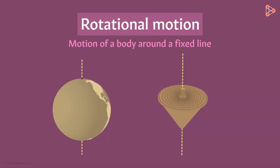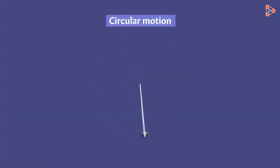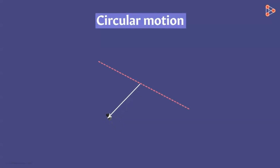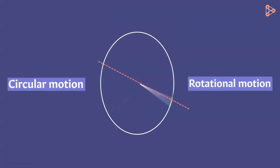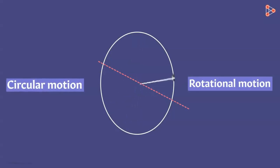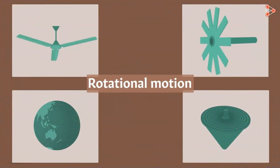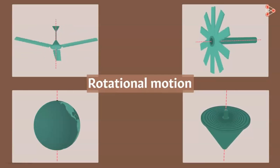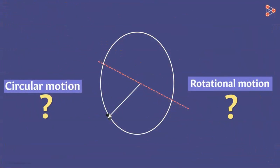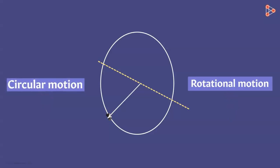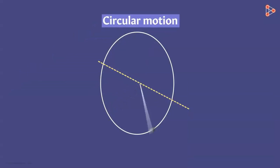But wait — let's go back to our earlier example. When the object was whirled around in circles, we said it was performing circular motion. But if we take this line as the axis of rotation, we could also say the object is performing rotational motion around this fixed line. So what exactly is the difference? In all examples of rotational motion, the axis of rotation is a part of the object — it passes through the object. But in the case of the whirled stone, the axis of rotation is not passing through the object; it is totally separate from it. Hence we don't call this rotational motion. This is circular motion and not rotational. So this is the difference between circular and rotational motion.